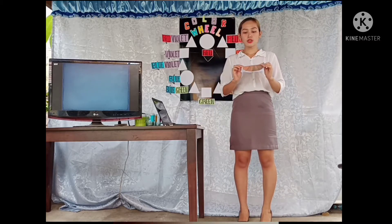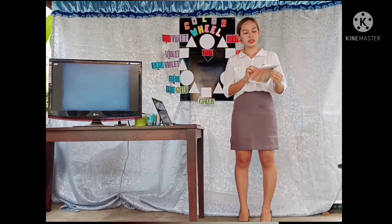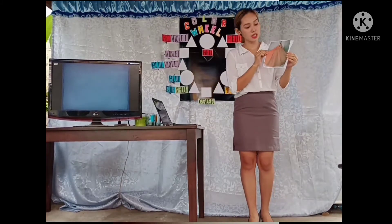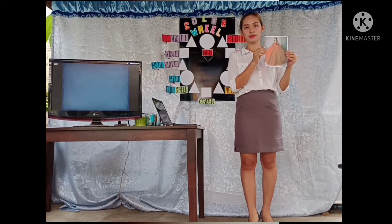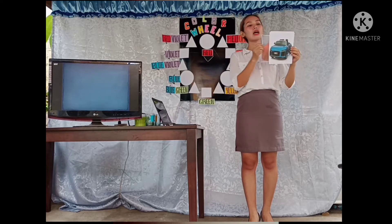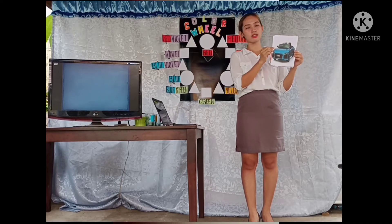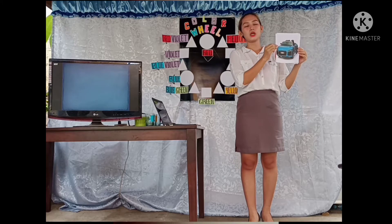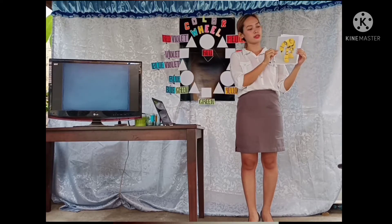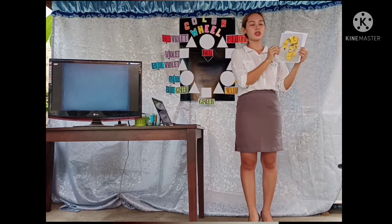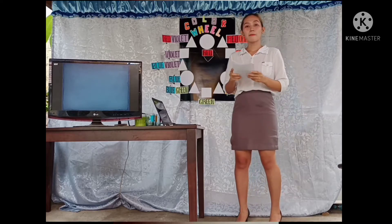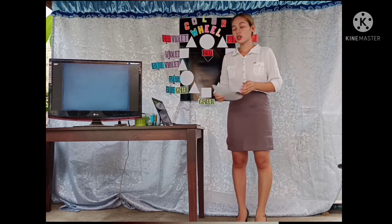I have here some pictures. I want you to answer what I am going to ask. What is the color of the dress of this Barbie? Red. Very good. How about this car? Blue. Very good. How about this one? Yellow. Very good. So red, blue, and yellow are the primary colors.